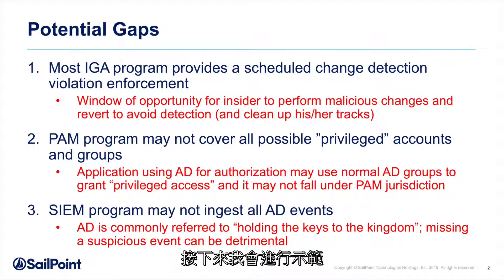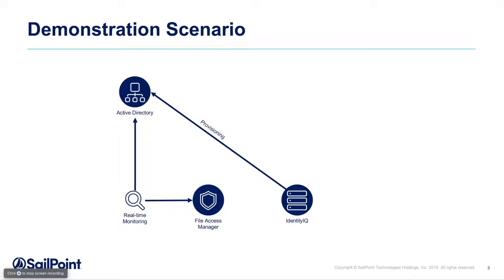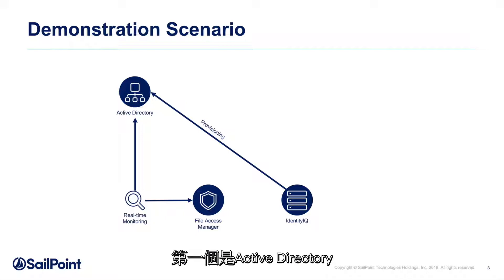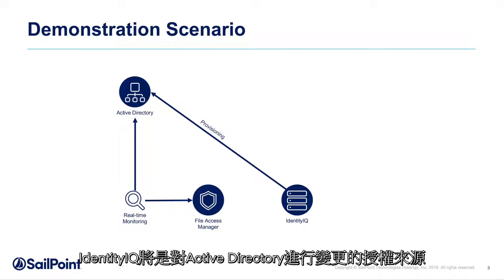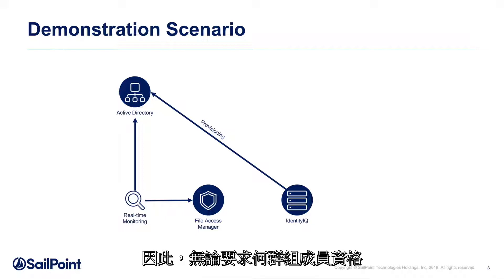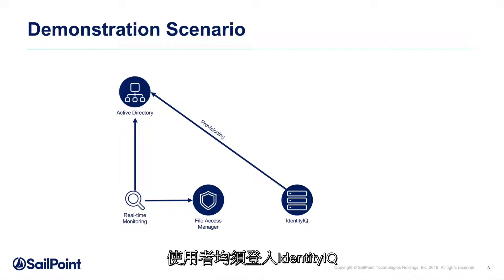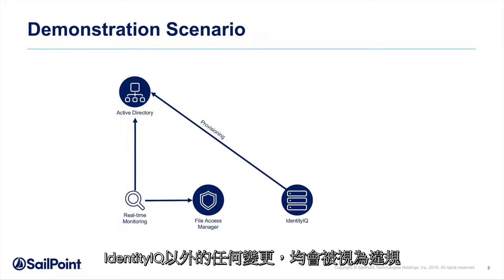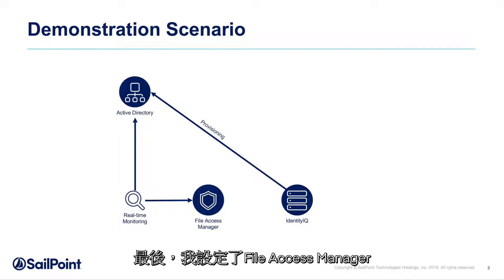Now, let me proceed to the demo. In this scenario, I have set up three systems. One is Active Directory. Second will be IdentityIQ — IdentityIQ will be the authoritative source for making changes to Active Directory, so any users who want to request group membership will have to log in to IdentityIQ, submit a request, get it approved, and if approved, IdentityIQ will automatically provision the change. Anything that happens outside of it will be considered a violation. Lastly, I have File Access Manager set up, which is basically monitoring Active Directory for real-time changes.